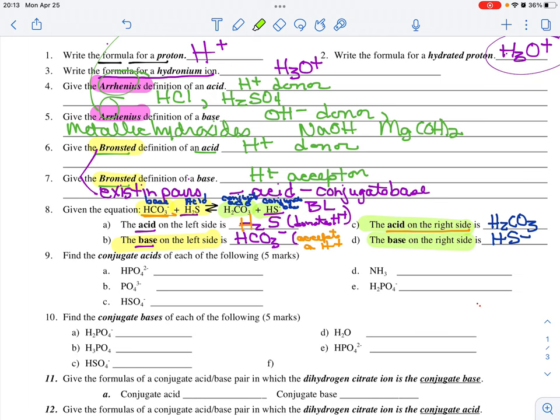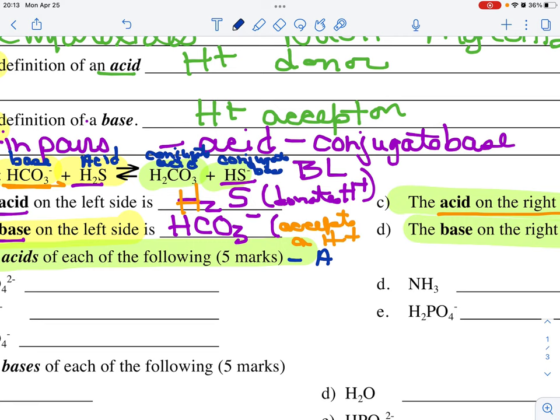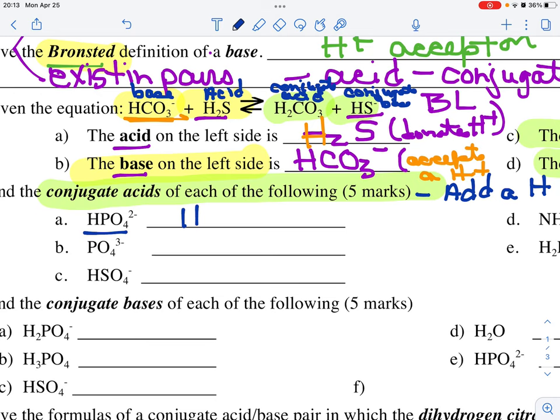Next, we're asked to find the conjugate acids of each of the following that we have right here. And I want to make a note that in order to find our conjugate acid, we're going to add one hydrogen. So to the monohydrogen phosphate, we're going to add one hydrogen.